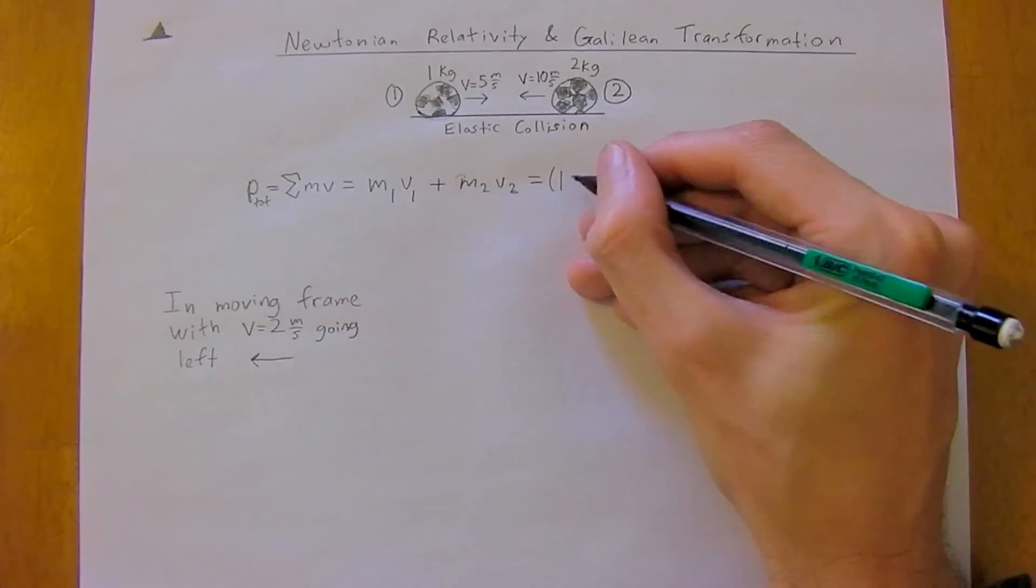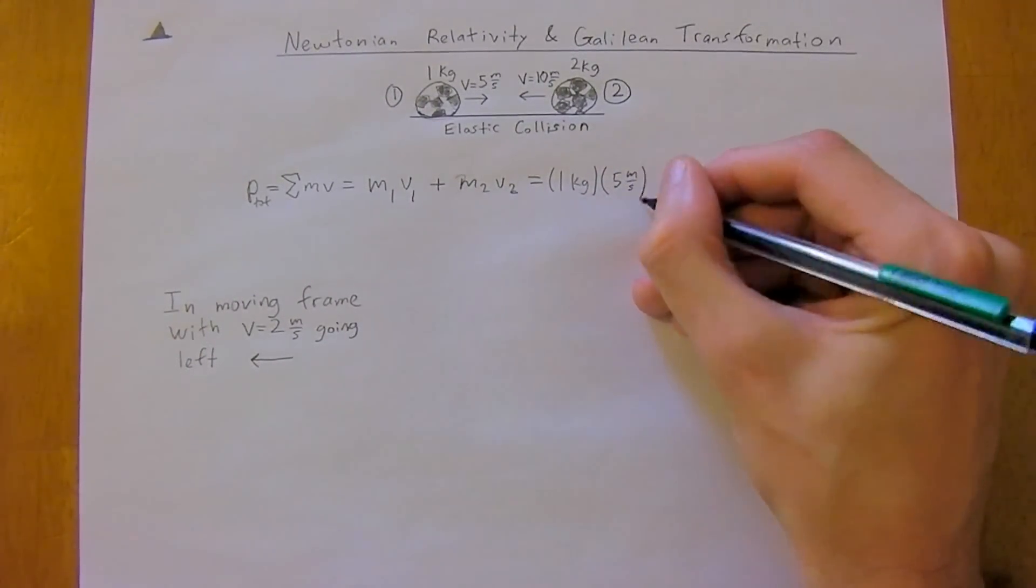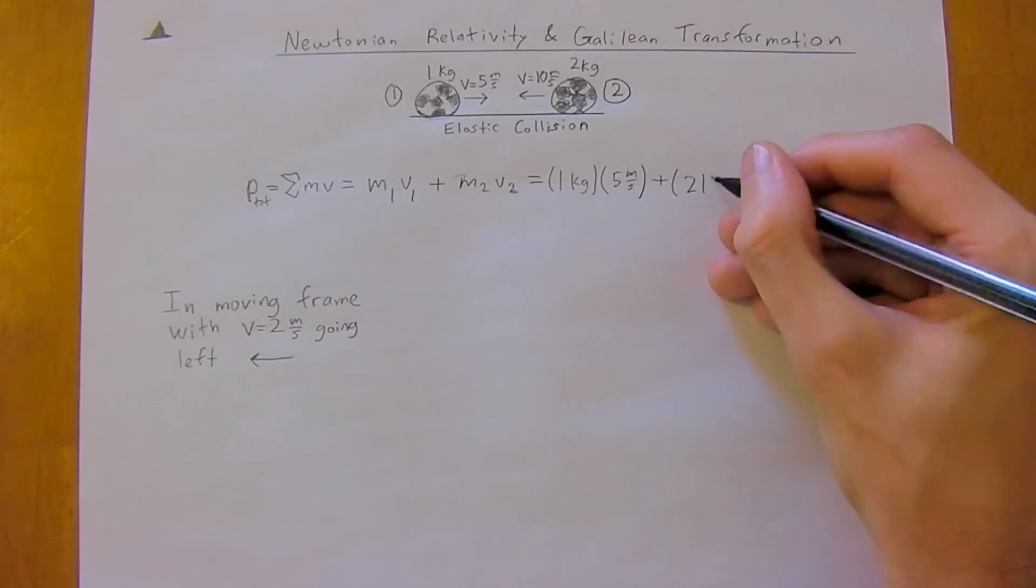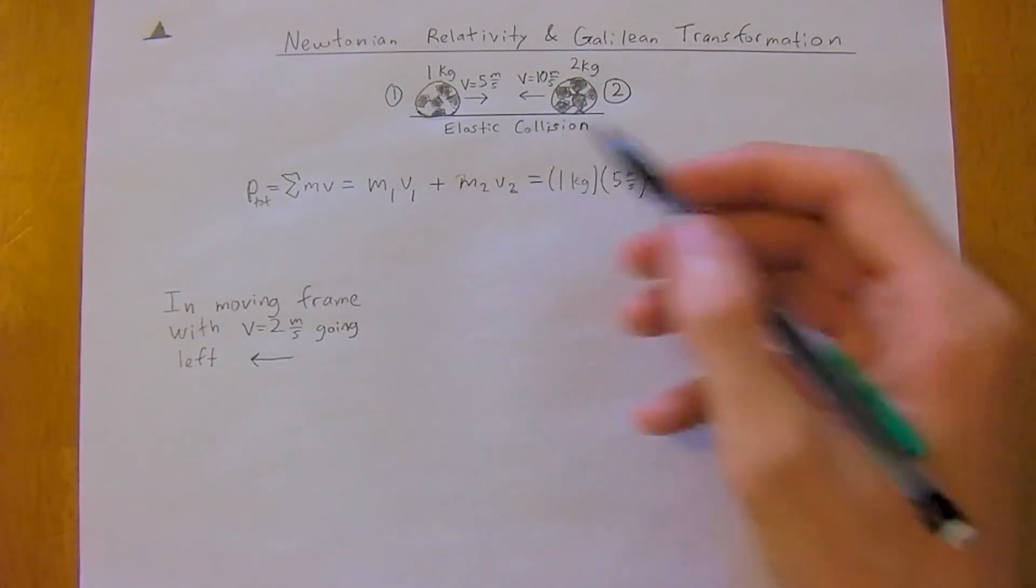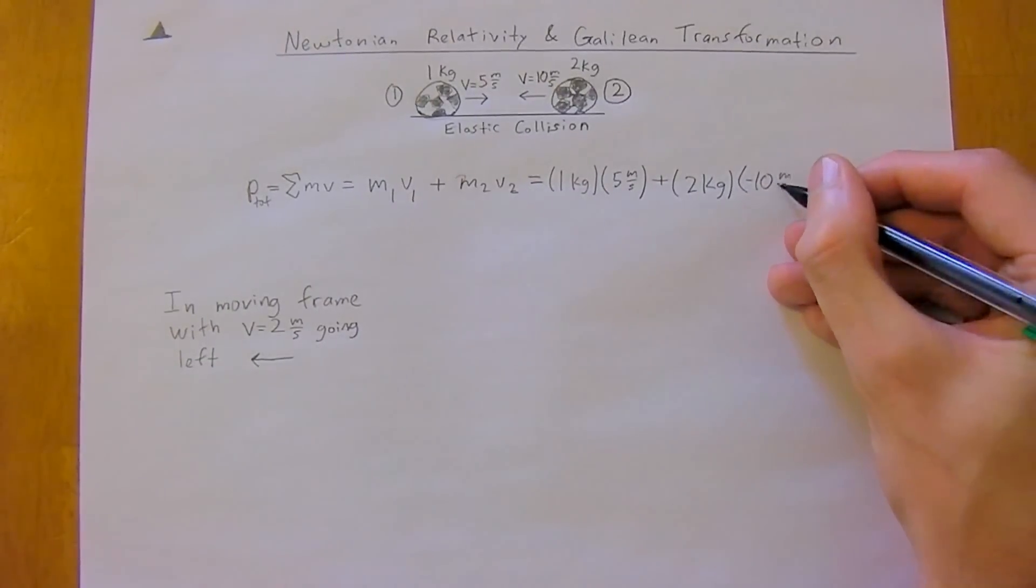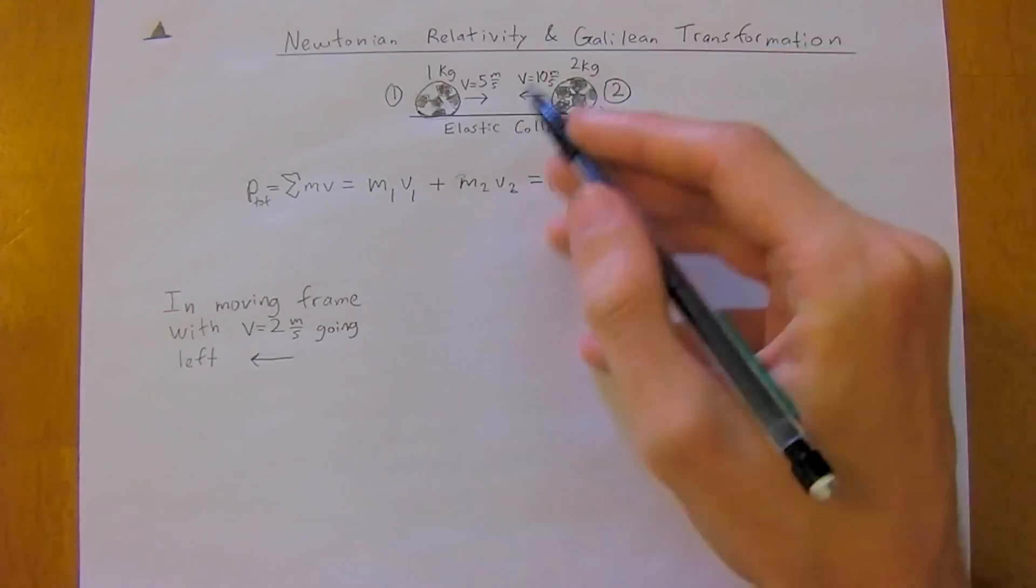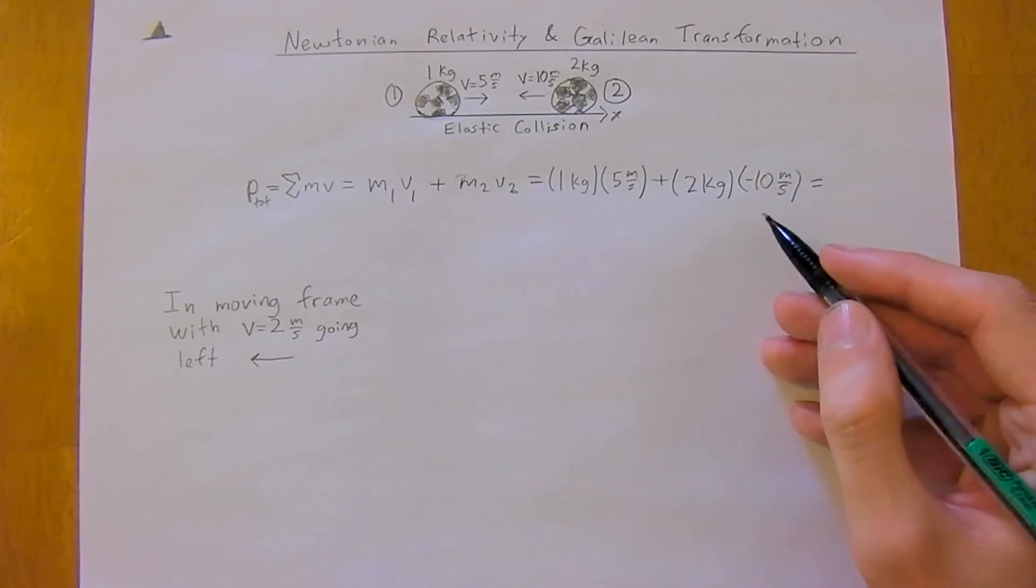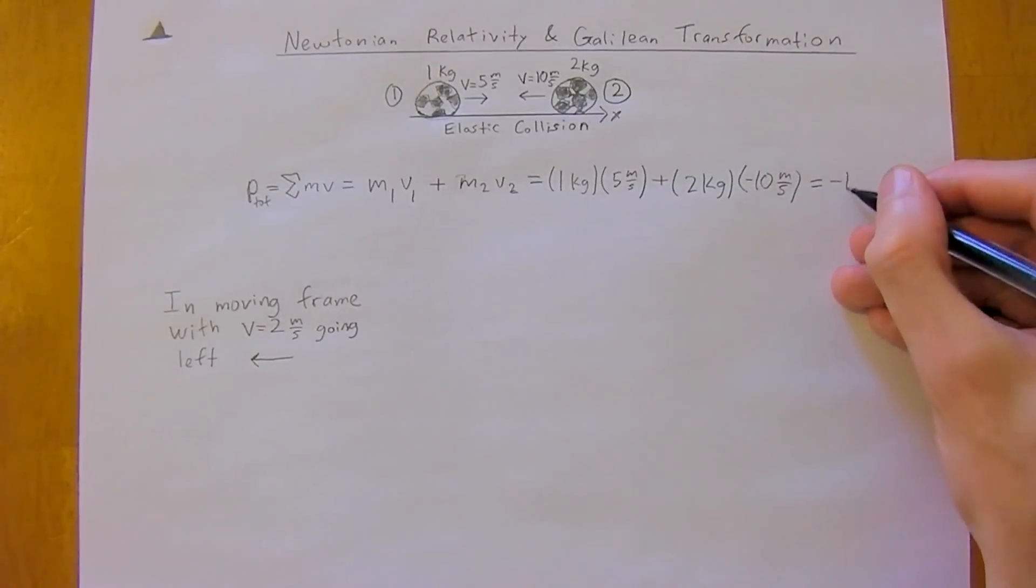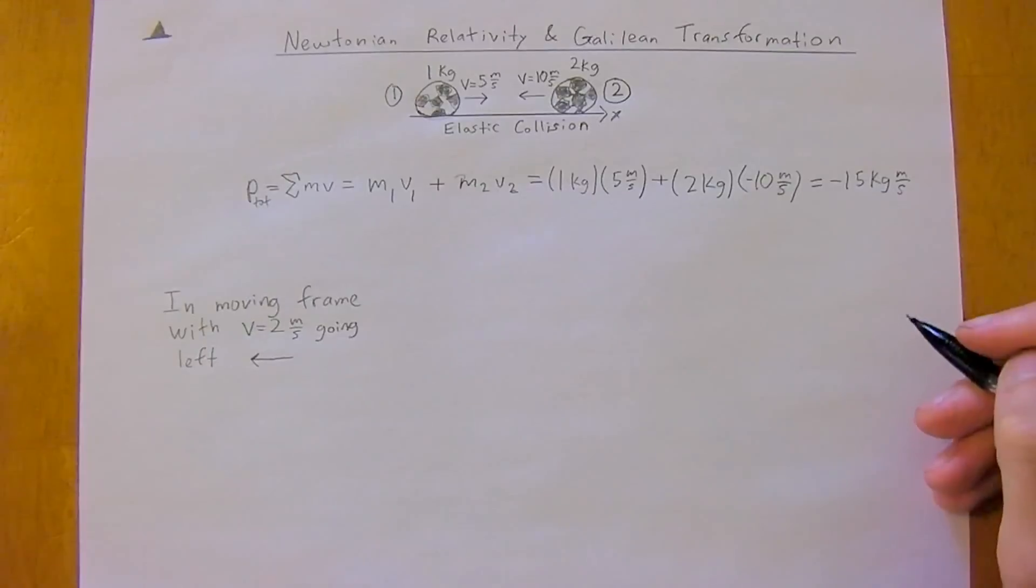So very simple calculation. One kilogram times five meters per second, plus two kilograms times, now notice velocity is going left, so it needs to be negative, 10 meters per second. The convention we use is x-axis going right with velocity is positive, but left is negative. So you run through this equation, plug it into your calculator, and you find out momentum is negative 15 kilograms meters per second, which is units for momentum.